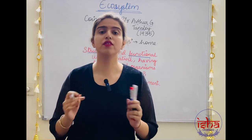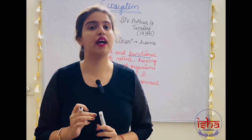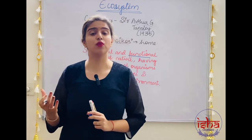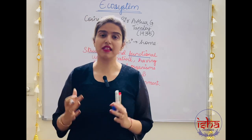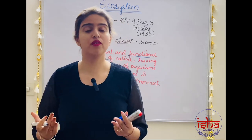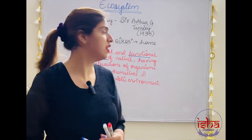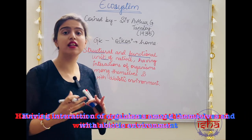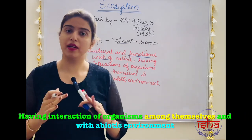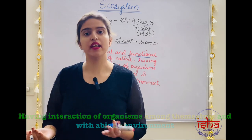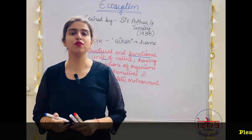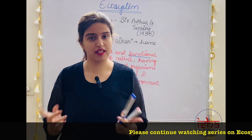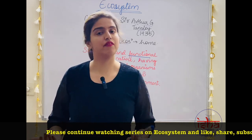Why is it called a functional unit? Because in an ecosystem, each organism plays a definite role. Let's say there are plants — they have a definite role. They are producers; they fix the carbon and pass on the food to the higher level, to the consumers. So it is a structural and functional unit having interactions of organisms among themselves and with their abiotic environment.